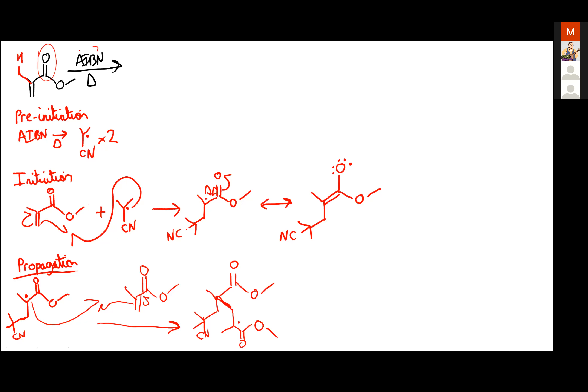AIBN or benzoyl peroxide is the radical initiator — you heat it and it makes radicals. There's only a tiny amount of it. Each propagation step extends the chain by one monomer unit. We form a dimer, then a trimer, a tetramer, and so on, adding them one by one. Technically propagation is complete once you return to the same radical you started with, having extended the chain by one unit.